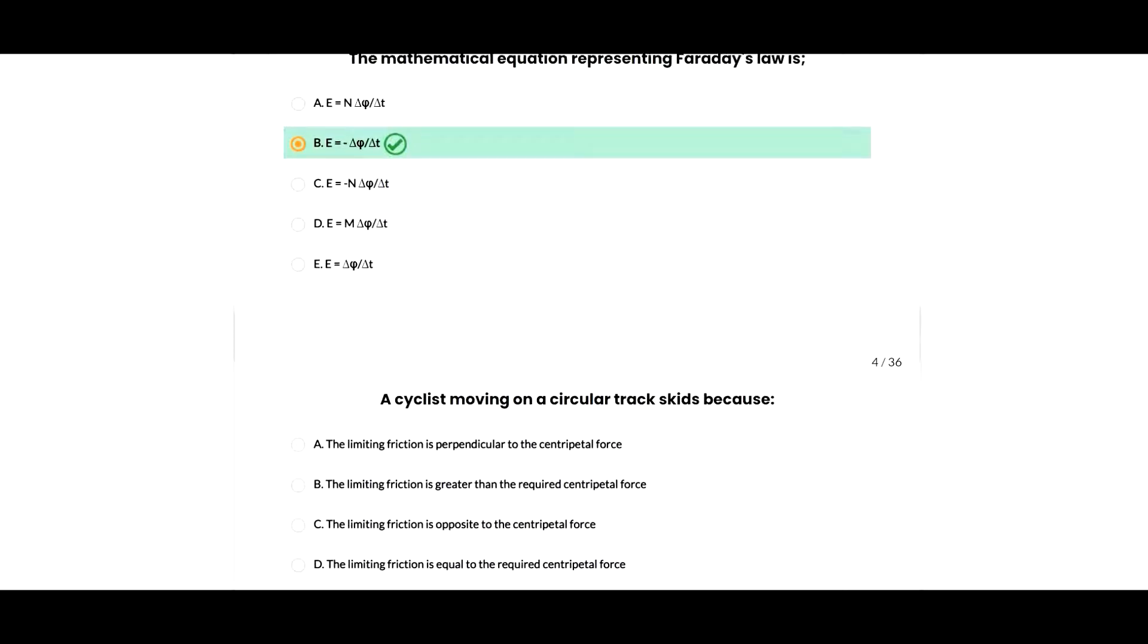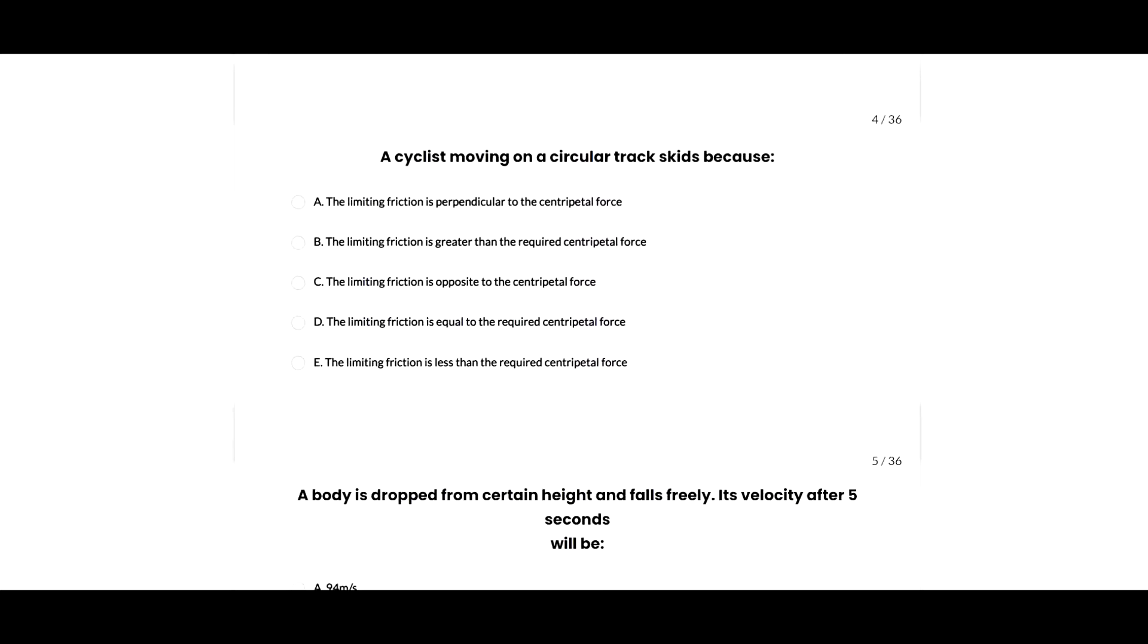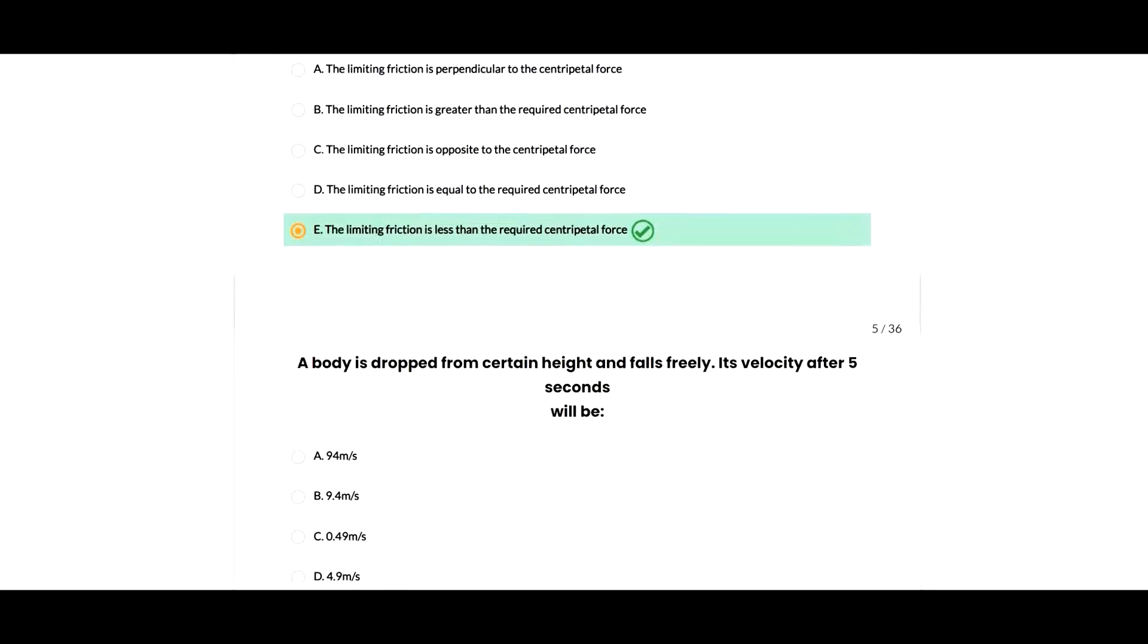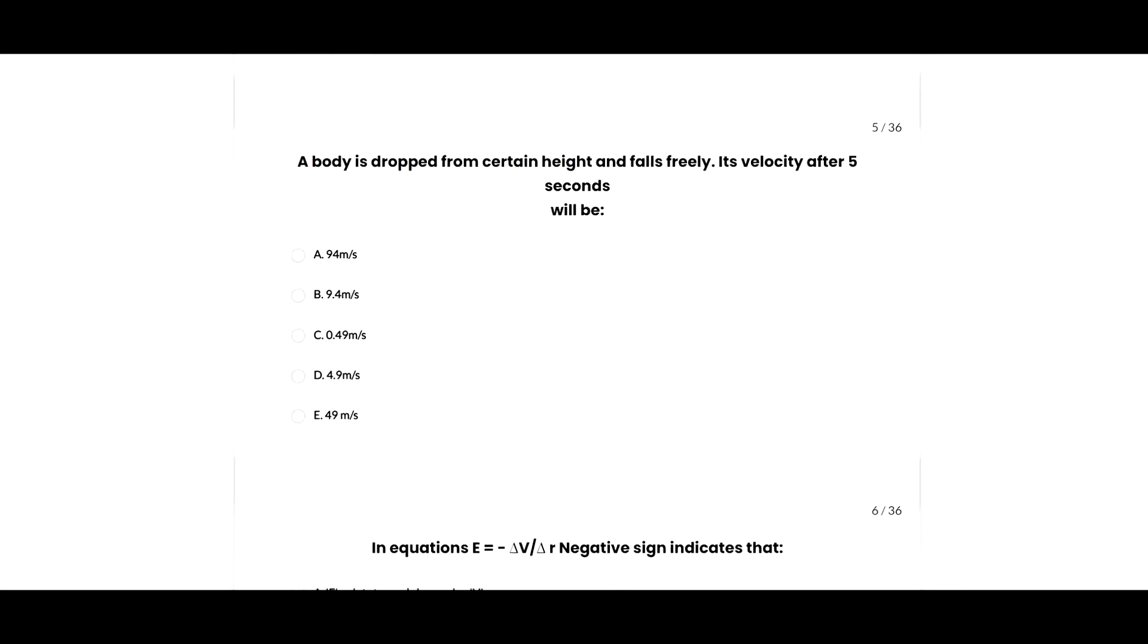Next question: a cyclist moving on a circular track skids because the limiting friction is less than the required centripetal force, so B option is correct. Next question: a body is dropped from a certain height and falls freely. Its velocity after five seconds will be 49 meters per second, so B option is correct.